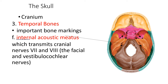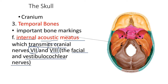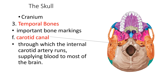Another marking is the internal acoustic meatus. Inside the temporal bone, the vestibulocochlear nerve is located there. It must have a channel going to the brain for interpretation at the auditory cortex of the temporal lobe. This is a passageway for cranial nerves number 7 and 8 — the facial and vestibulocochlear nerves — entering this channel going to our auditory cortex for interpretation.